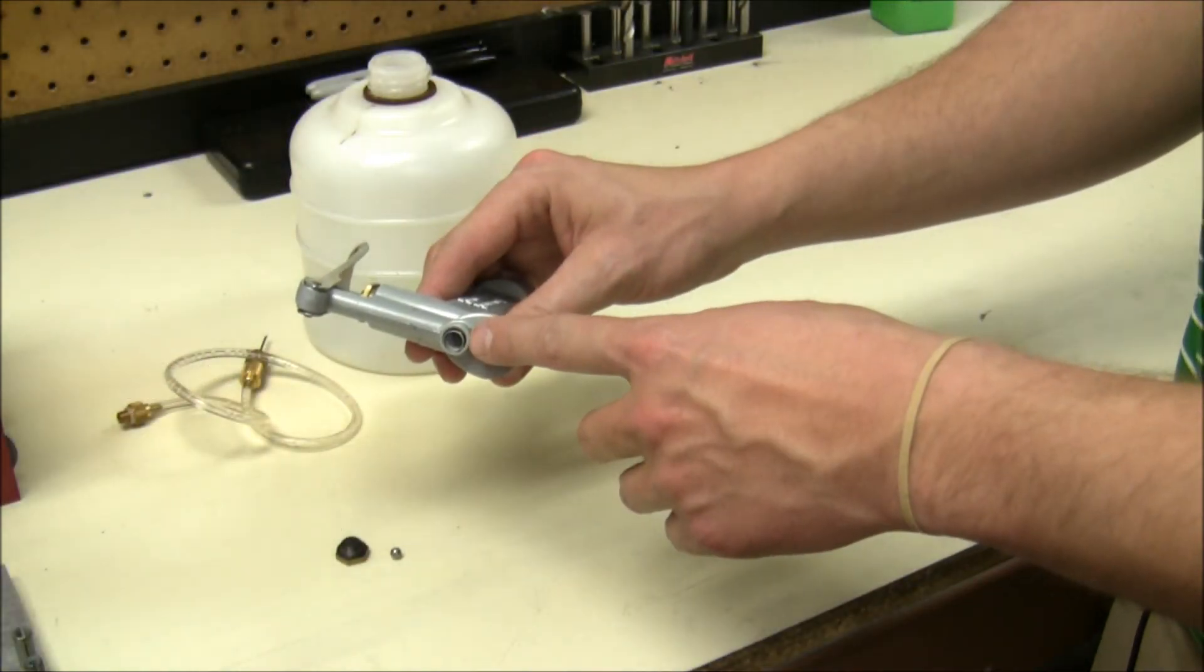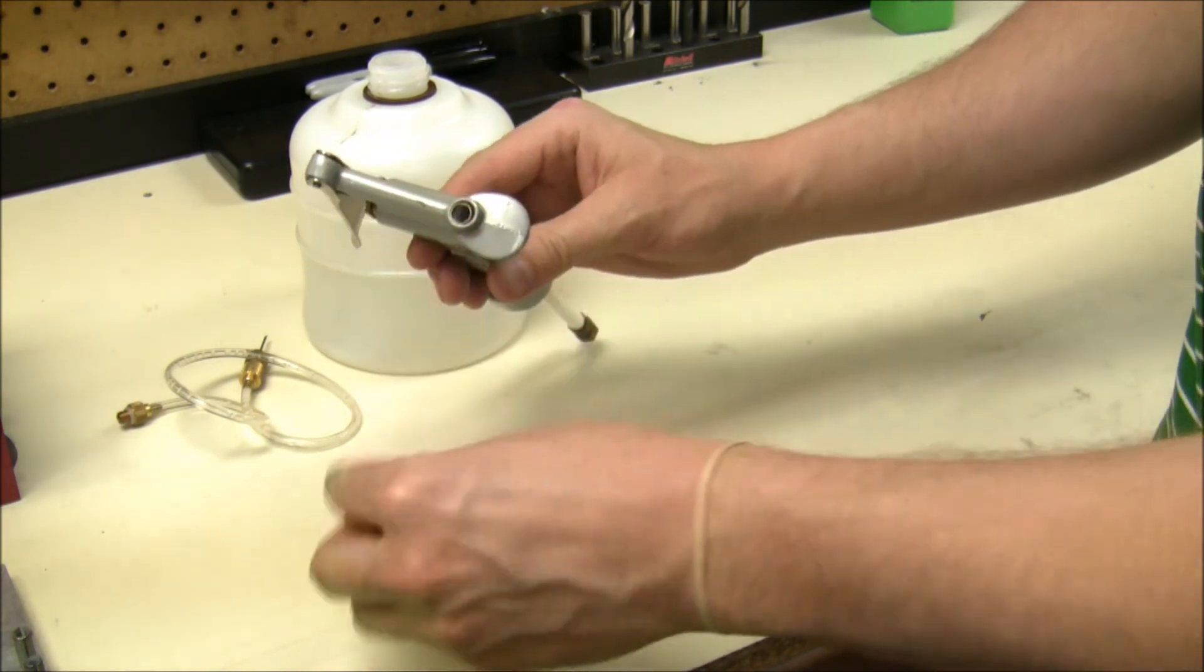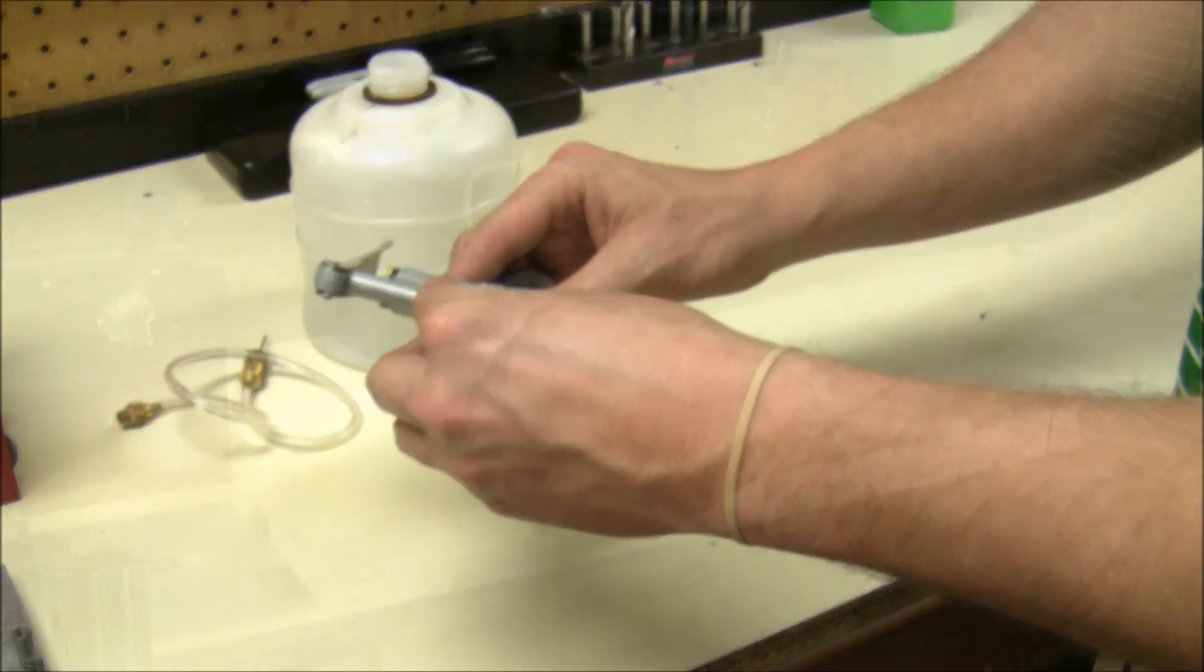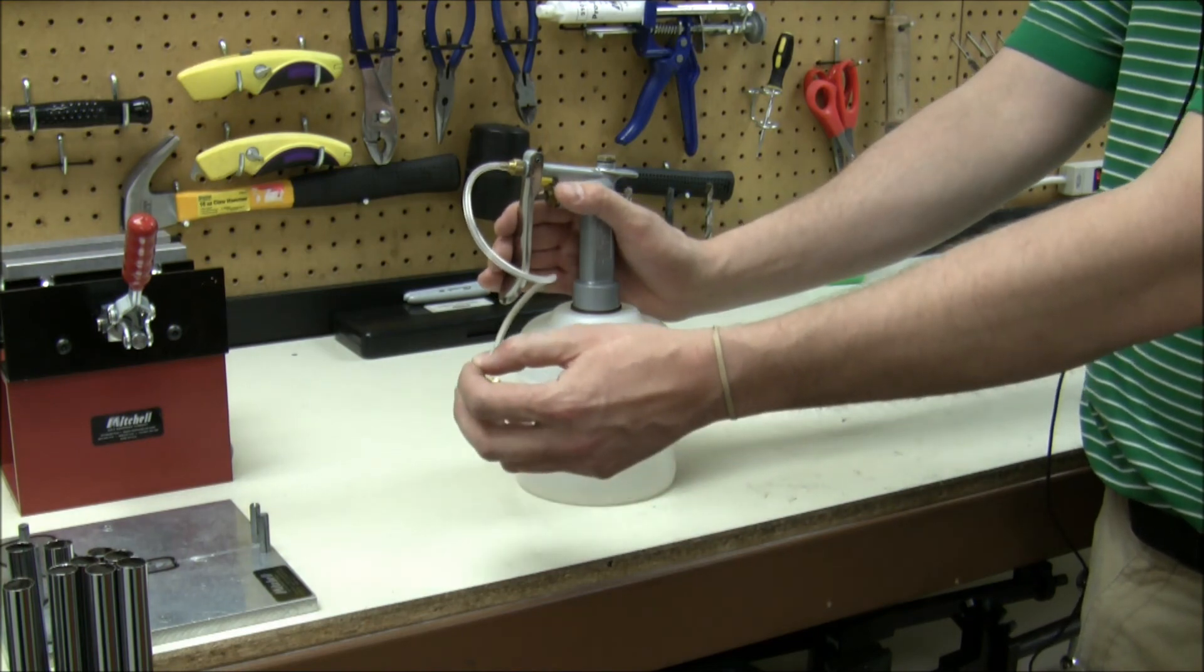For the top assembly, replace the spring first, then drop the ball bearing in and replace the screw tightly. After completing step 3, return to step 1 to check prime.